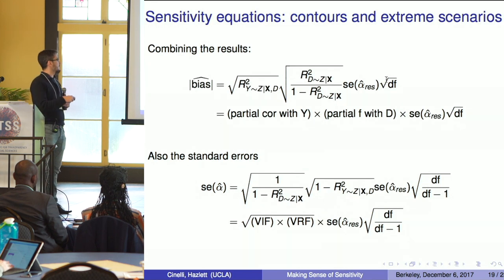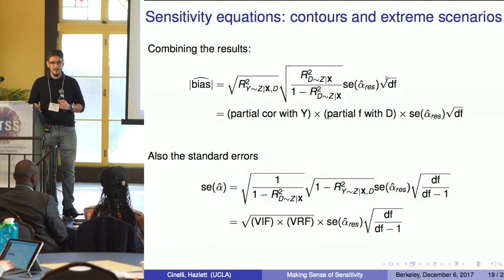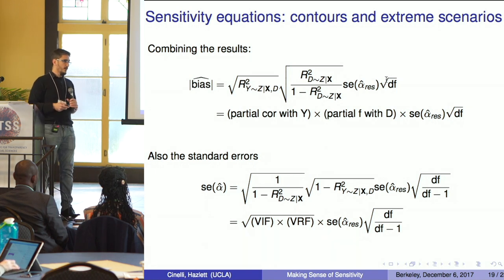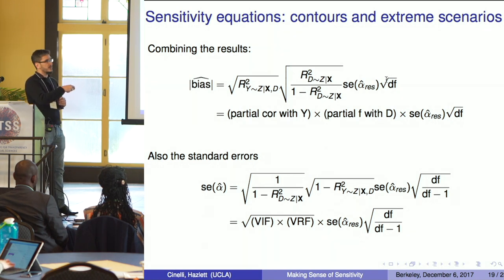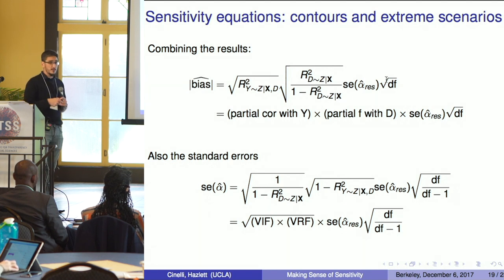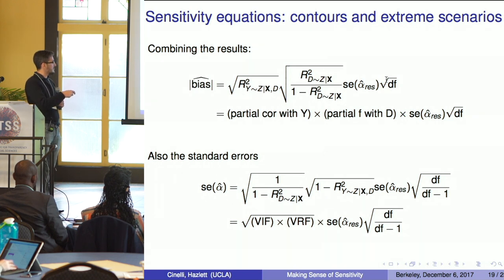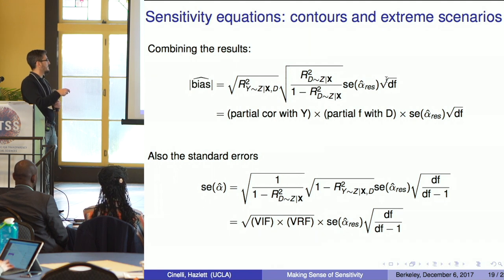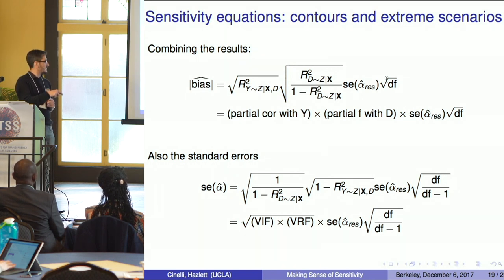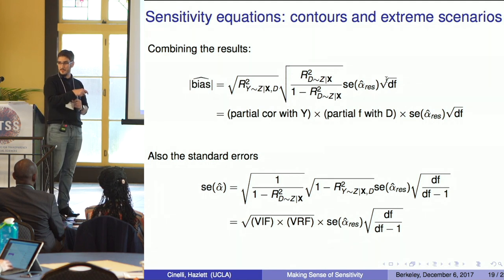Combining these results gives expressions for bias and standard errors in terms of the partial R-squared of the confounder. The sensitivity equations for the contours and extreme scenarios reveal interesting things: the bias depends on the partial R-squared of the confounder with the outcome via a partial correlation bounded by one — so it doesn't blow up. But in terms of treatment it depends on the F-statistic, which is unbounded in partial correlation terms, meaning you can't do an extreme scenario with the treatment.